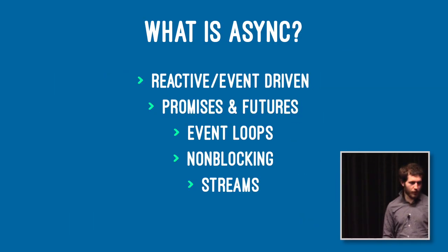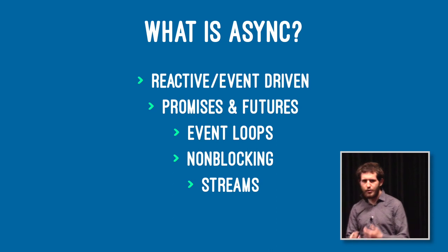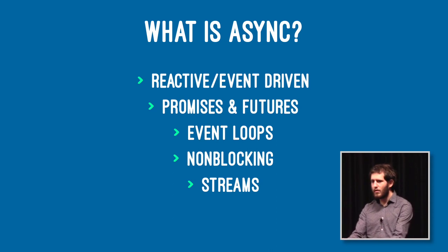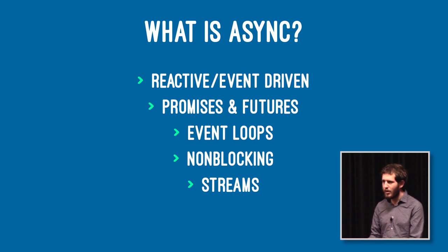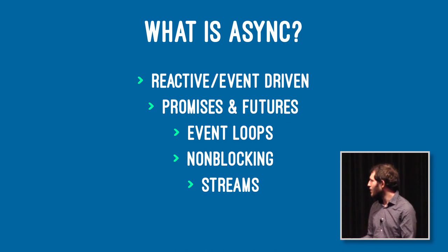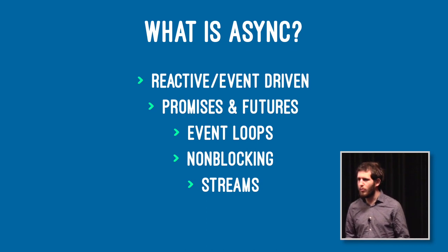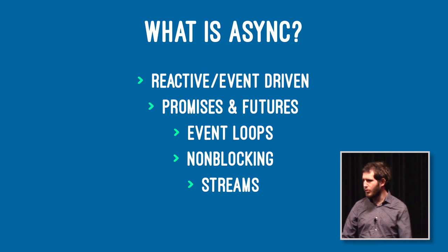Async, as I explained, is event-driven programming. Event loops are a part of it — a dispatch queue is an event loop. You're dispatching tasks to it, and every task that gets dispatched gets its turn. When it's complete or stalling, the next one gets its turn. It will get a new task every time a notification happens. Non-blocking and streams are all very common concepts in async.